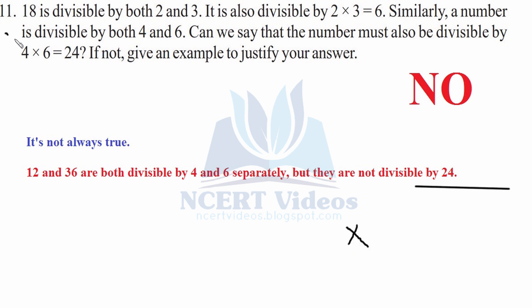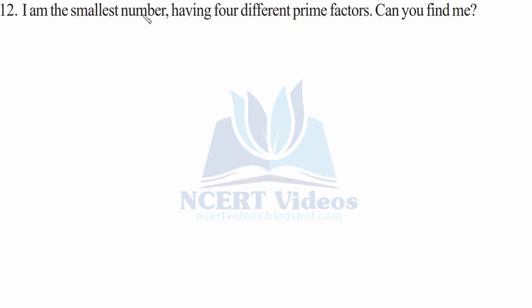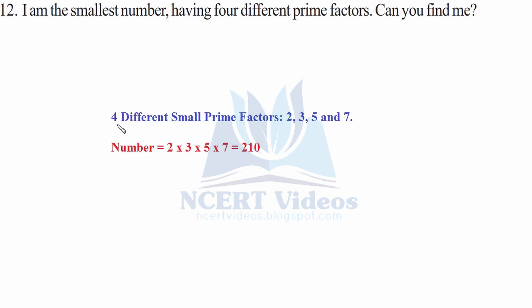Question 12: I am the smallest number having four different prime factors — can you find me? The four smallest consecutive prime numbers are 2, 3, 5, and 7. Multiplying them: 2 × 3 × 5 × 7 = 210. So 210 is the smallest number having four different prime factors. That was question 12.